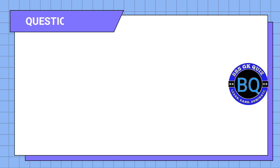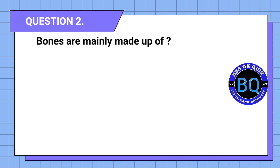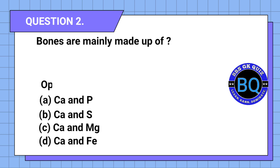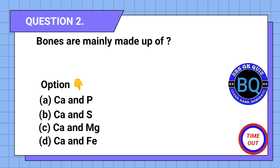Question 2. Bones are mainly made up of... Your options are here. The correct answer is option A.